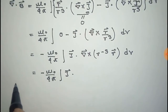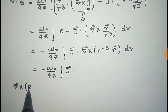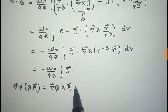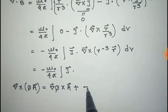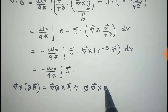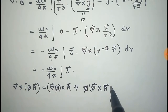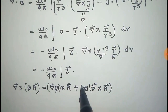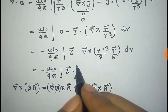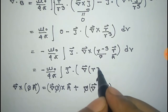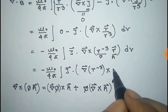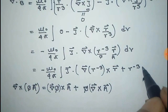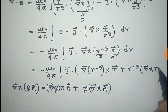In this case, we use the formula for the curl of phi times a, where phi is the scalar and a is the vector. The formula is: grad phi cross a plus phi into curl of a. We apply this formula here, taking r to the power minus 3 as phi and r vector as a.